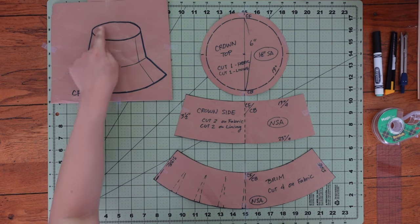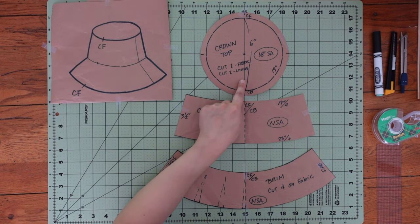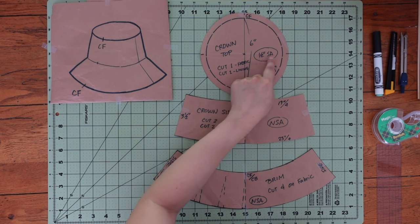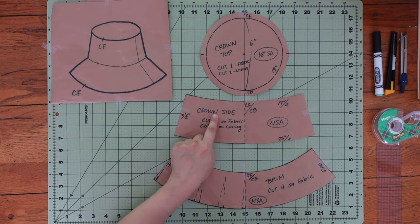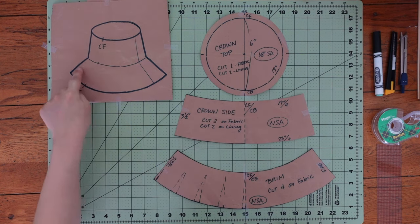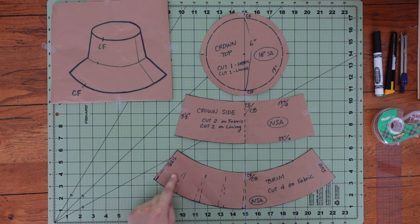Here are all the pattern pieces I made. The pattern for the top of the crown, which I gave half inch seam allowance to. And the pattern for the side of the crown. The pattern for the brim.